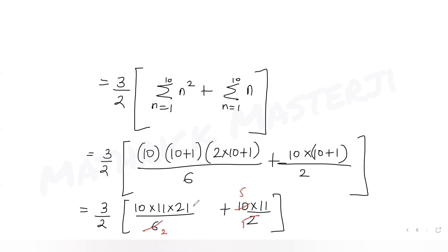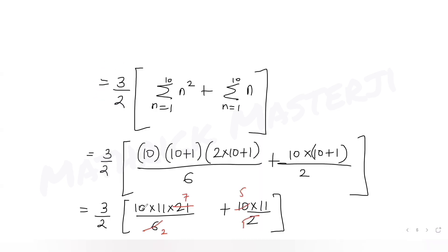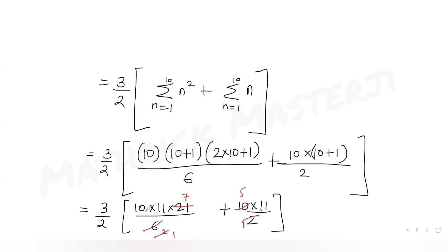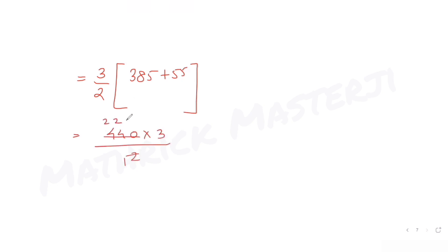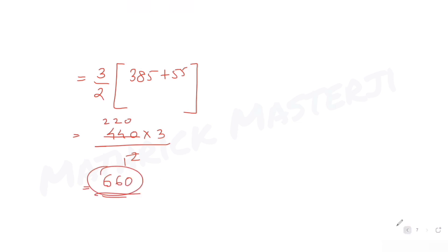So we get 3/2 times (385 + 55). That gives 3/2 times 440. Cancelling, 440/2 = 220, and 220 × 3 = 660. So the answer to the question is 660.